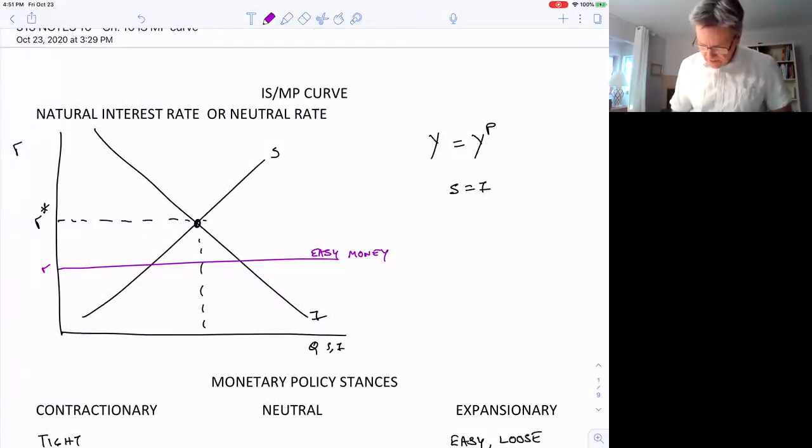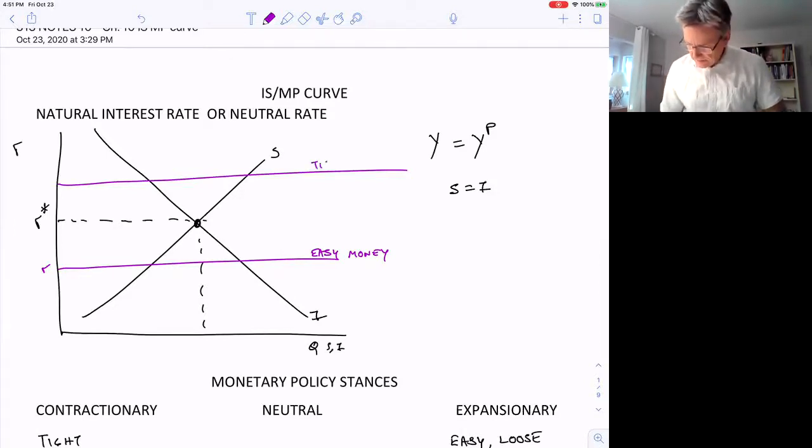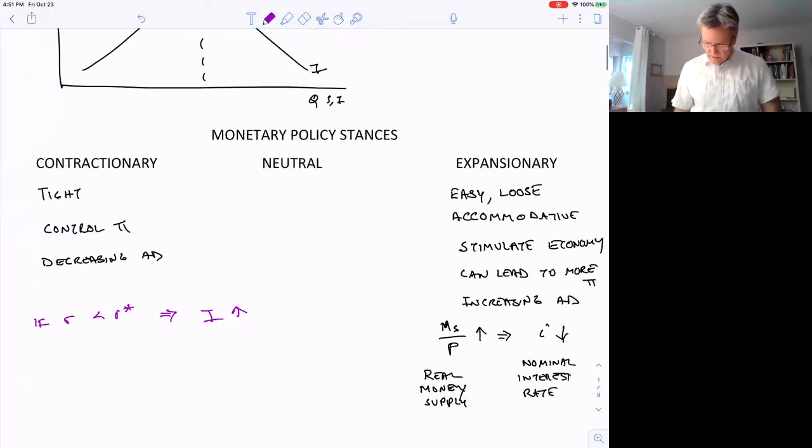If R set by the Federal Reserve is higher than R star, then we can look at that as a tight monetary policy. Tight policy. So if R is greater than R star, that's going to make investment fall, decrease C plus I plus G, and aggregate demand would fall, shift to the left.